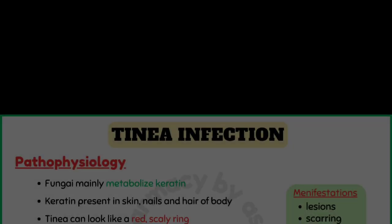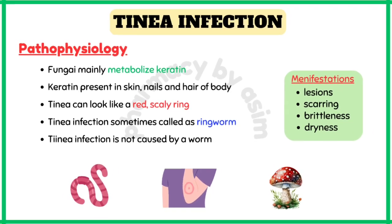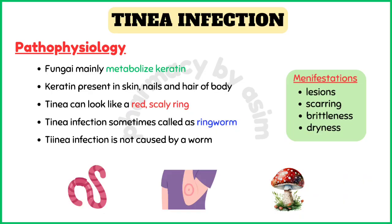Regarding the pathophysiology of tinea infection: fungi mainly metabolize keratin present in skin, nails, and hair of the body. This ultimately leads to lesions, scarring, brittleness, and dryness of the affected organs. Tinea is sometimes called ringworm because on much of the body and face it can look like a red, scaly ring. It is called ringworm even though it is not caused by a worm.